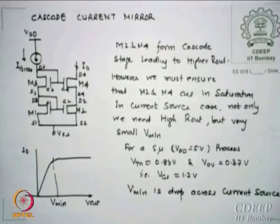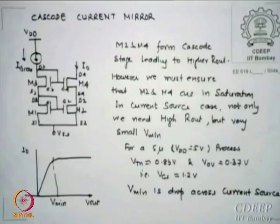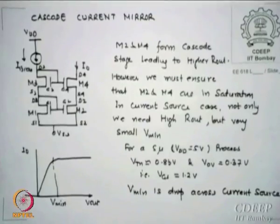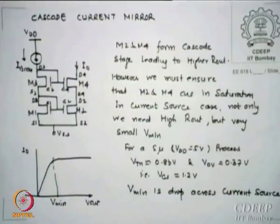VSB effects can be taken into account if the body is connected to ground rather than source — that means there is a potential and some VT will shift. Right now I am not considering the VSB effect, but it can always be brought into the expressions. Let us first focus on the Vmin part, because by intuition I know that putting a cascode gives higher Rout. I want to first calculate Vmin.